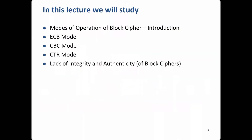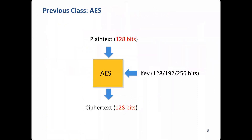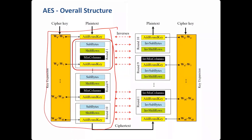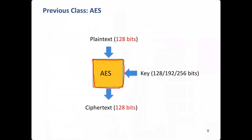Today we will study block ciphers — specifically modes of operation. In the previous class we studied AES, a block cipher mode of encryption, and looked at its internal structure for encryption and decryption. AES takes as input a block of 128 bits and the output is also 128 bits. The key can be 128, 192, or 256 bits.